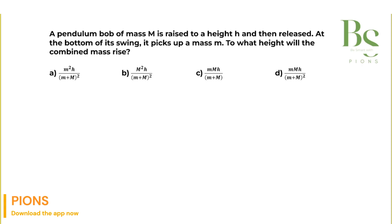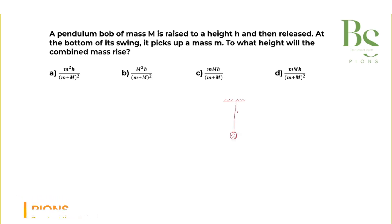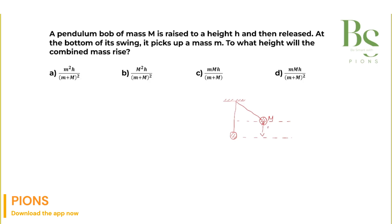Let's understand the concept. If this is a simple pendulum, the mass of the bob is capital M. It has been raised to a certain height. Making a horizontal reference line, the gap between the raised position and the bottom is height h.